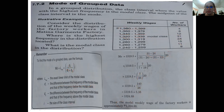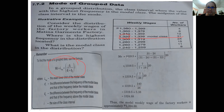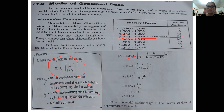To summarize the steps for finding the mode for grouped data: first, locate the class interval with the highest frequency — that is your modal class. Second, find the lower boundary by subtracting 0.5 from the lower limit of the modal class. Third, get D₁ (frequency of modal class minus frequency below) and D₂ (frequency of modal class minus frequency above). Fourth, count the class interval size I. Then substitute into the formula.